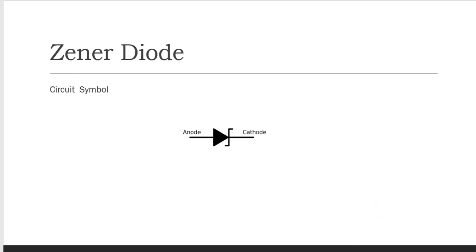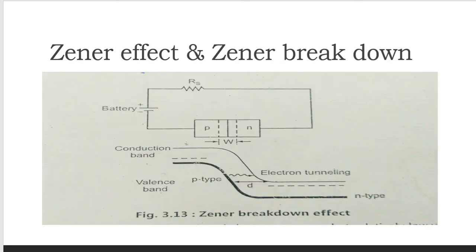The next component is the Zener diode — a heavily doped PN junction diode. Its circuit symbol has an anode, a cathode, and a distinctive bent cathode line indicating it is a Zener. Before understanding its working principle, we must understand the Zener effect and Zener breakdown. The Zener diode is operated in the reverse bias condition.